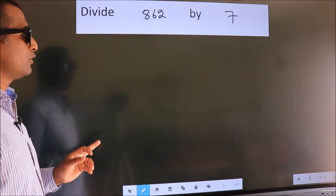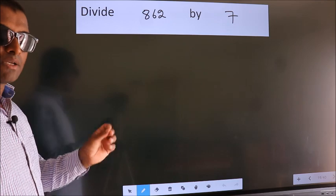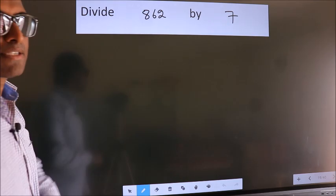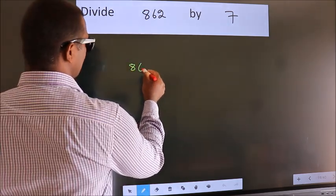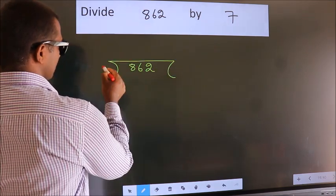Divide 862 by 7. To do this division, we should frame it in this way: 862 here, 7 here.